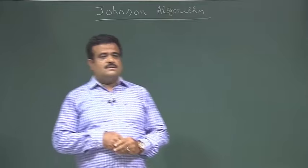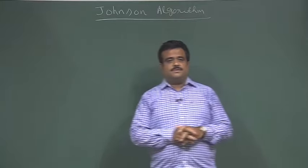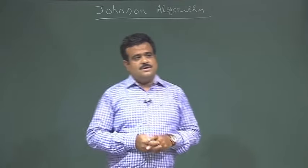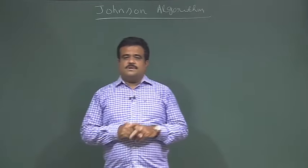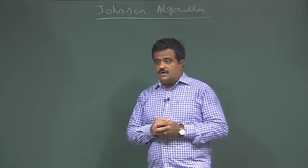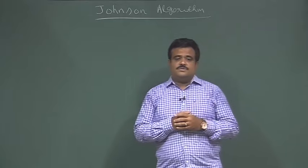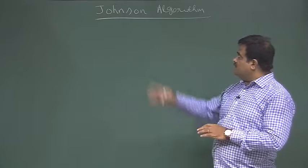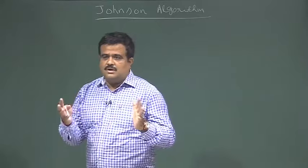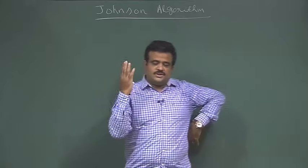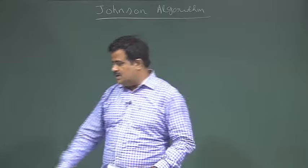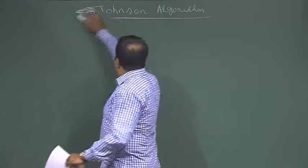We are talking about all-pairs shortest path. We have seen two dynamic programming based approaches. Last class we saw the Floyd-Warshall algorithm, so today we will talk about some applications of the Floyd-Warshall algorithm — specifically to find the transitive closure of a graph — and then we will move to another algorithm for finding all-pairs shortest path called Johnson's algorithm, which uses Dijkstra's algorithm.